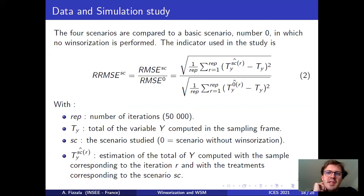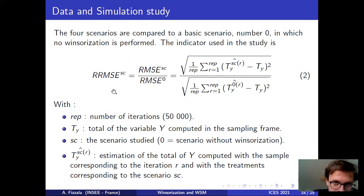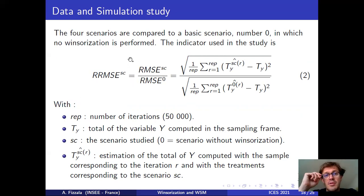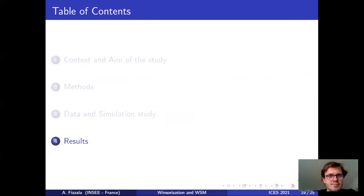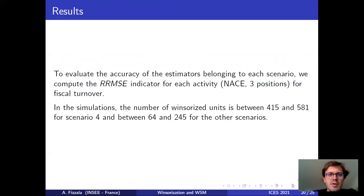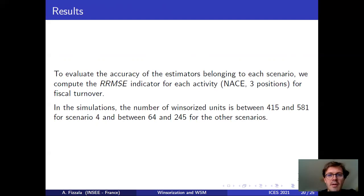To compare the scenarios, we use an indicator that is the ratio between the root mean square error of the scenario being evaluated and the root mean square error of the basic scenario without Winsorization. We compute this indicator for each activity at the three-digit NACE position for fiscal turnover.